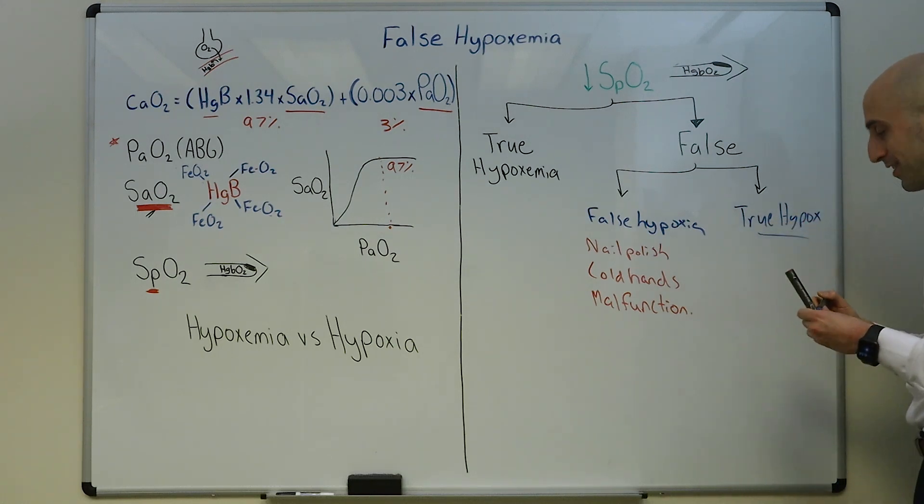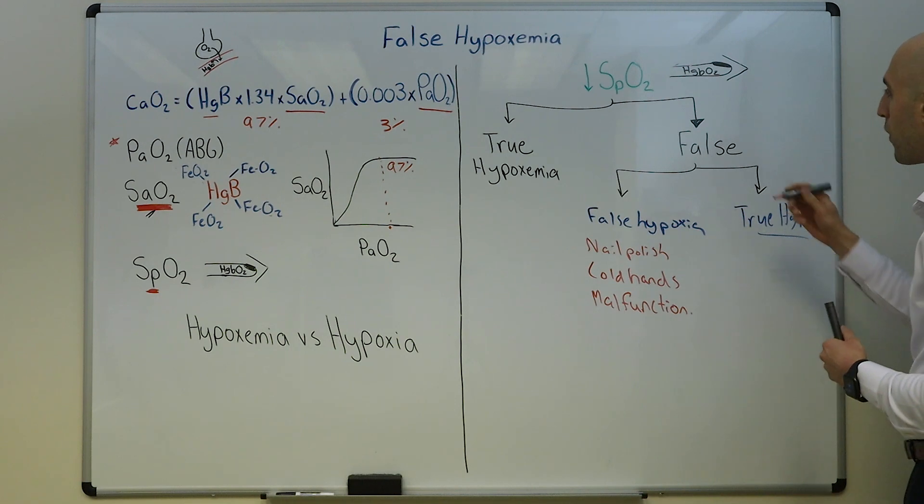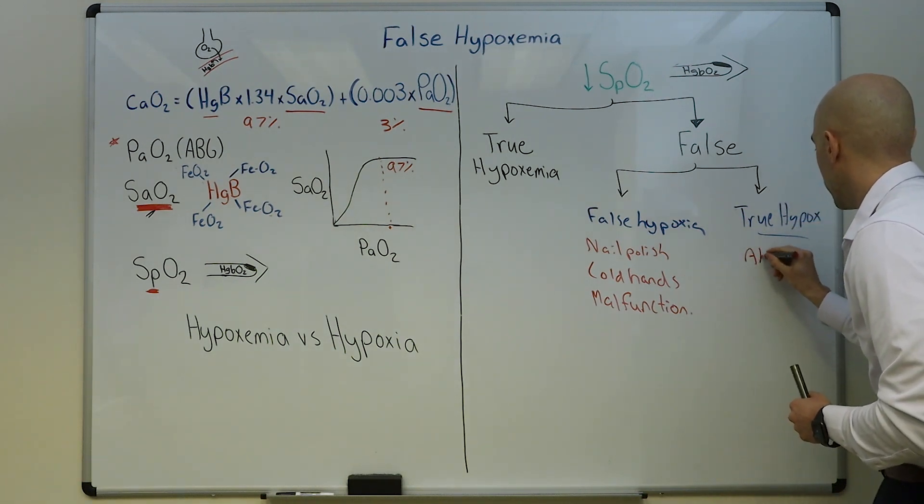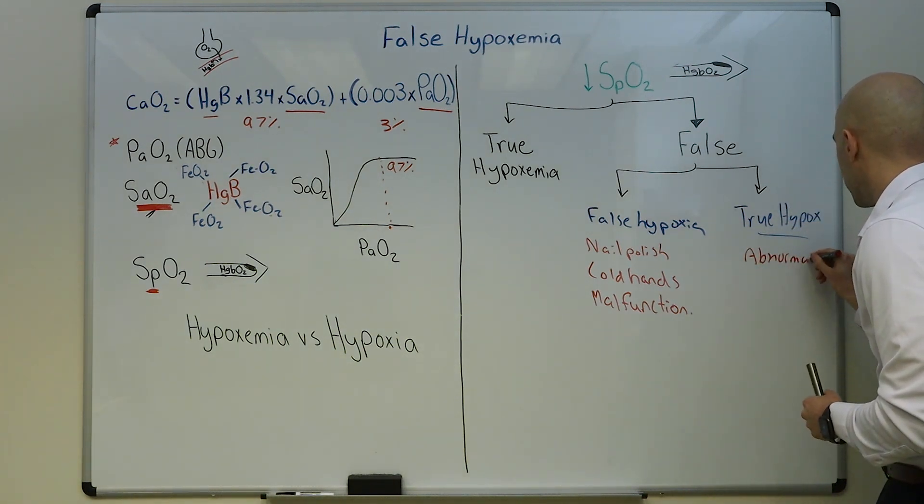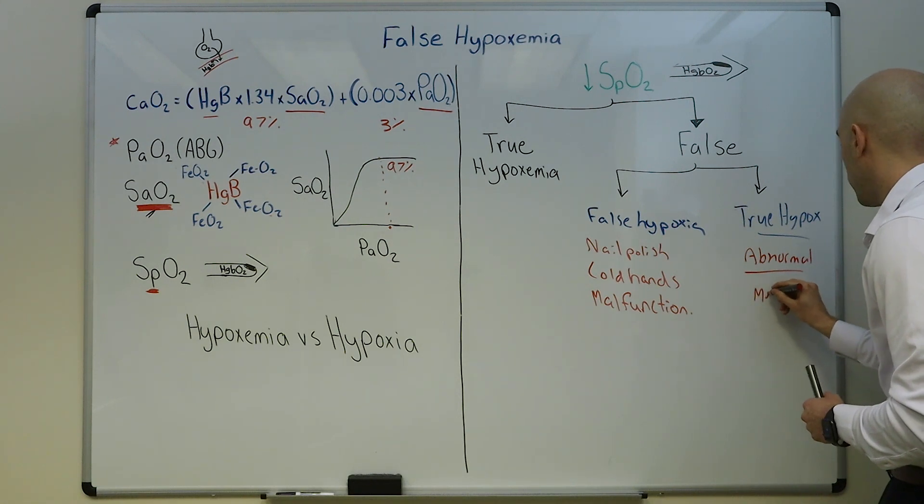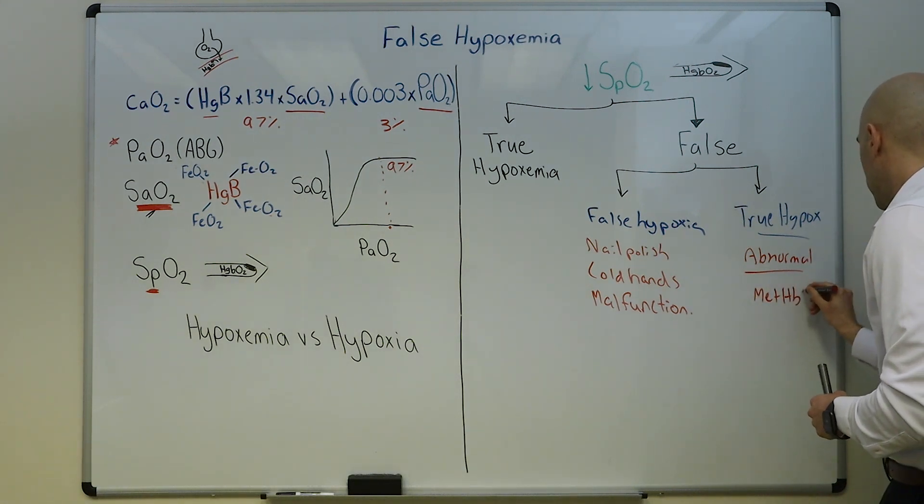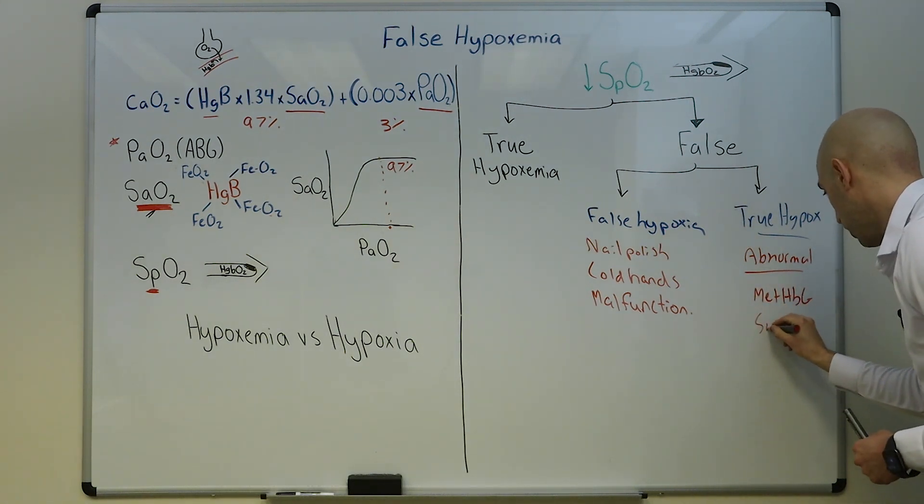This is the bucket that's most fascinating and where all of the legwork is going to make sense. Can you have false hypoxemia, meaning this device inaccurately measuring the SpO2, but have true hypoxia? Of course. But if you couldn't, I wouldn't make this additional category. So for this category, this is when we have abnormal hemoglobin, and we'll explain what we mean by this.